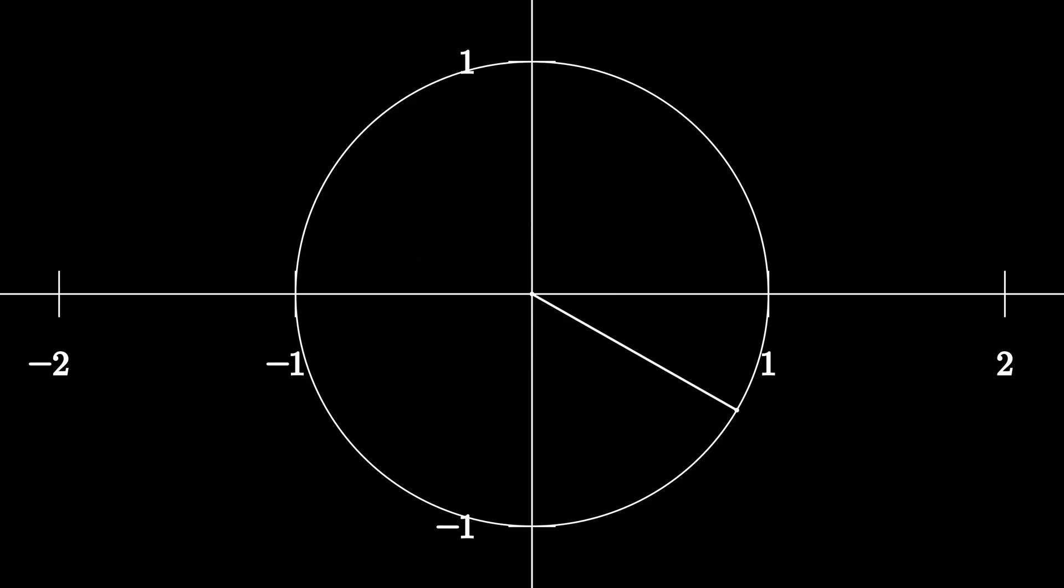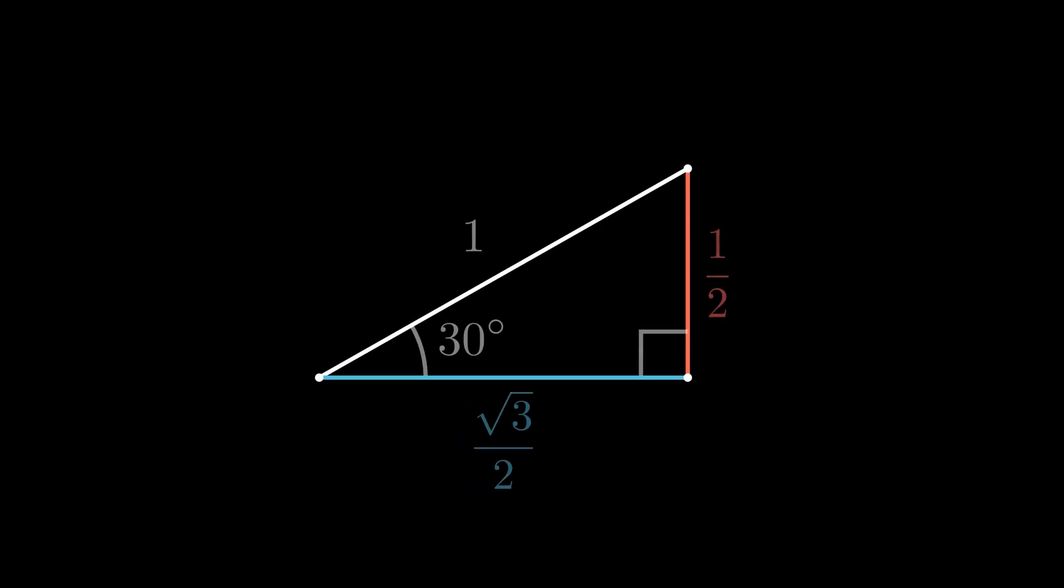The unit circle is powerful on its own, but even stronger when we connect it with special right triangles. 45, 45, 90 degrees triangle has side 1 over root 2 to 1 over root 2 to 1. And 30, 60, 90 degrees triangle has side 1 half to root 3 over 2 to 1.